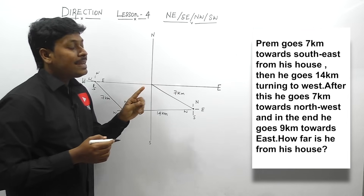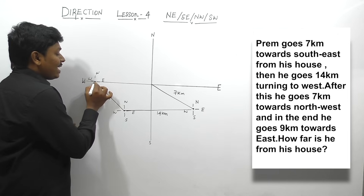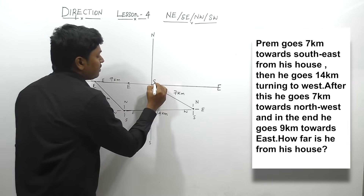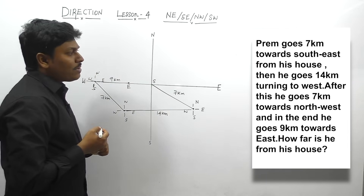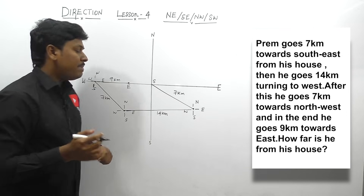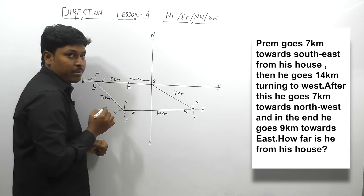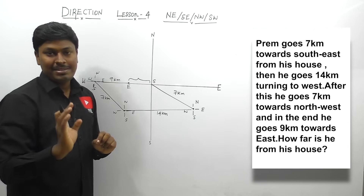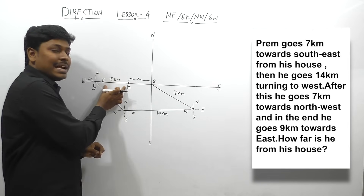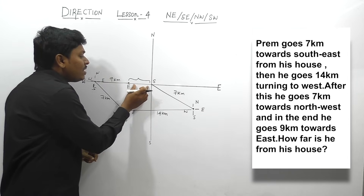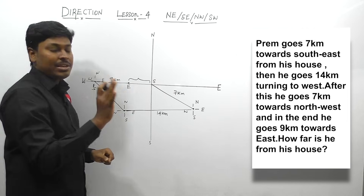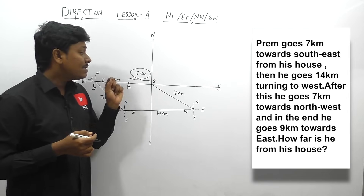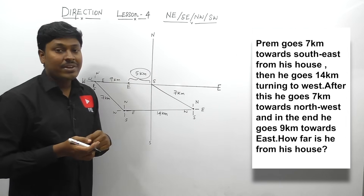And in the end, he goes 9 km towards east. So from this point, he is covering 9 km towards east. This is the ending point and Prem started from his house as the starting point. The question is: how far is he from his house? They are asking the distance between starting and ending point. This looks like a parallelogram — both lengths should be the same. We have 14 km and 9 km, so 14 minus 9 equals 5 km. The distance from starting to ending point is 5 km.